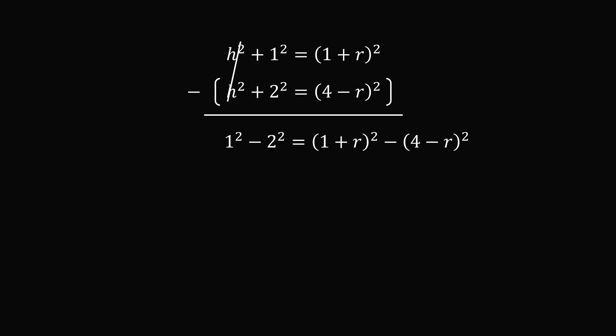1 squared is equal to 1. 2 squared is equal to 4. We then expand each binomial. The square of 1 plus R is 1 plus 2R plus R squared, and the square of 4 minus R is 16 minus 8R plus R squared.